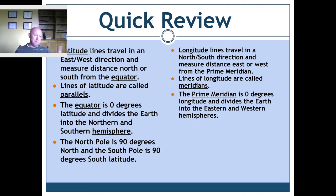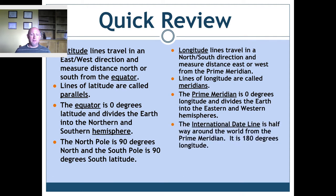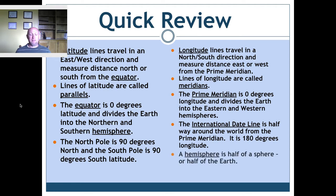It divides the earth into the eastern and western hemispheres. On the exact opposite side of the earth is another line we call the international date line, which is 180 degrees longitude — it's neither east nor west. Both the prime meridian and the international date line actually divide the earth into the eastern and western hemispheres; one is on one side of the planet and the other is on the other side. Always keep in mind that a hemisphere means half of a sphere.